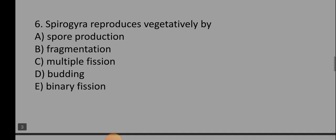Number six: Spirogyra reproduces vegetatively by: A) Spore production, B) Fragmentation, C) Multiple fission, D) Budding, E) Binary fission. So the correct option is option B, which is fragmentation. That's the correct option.